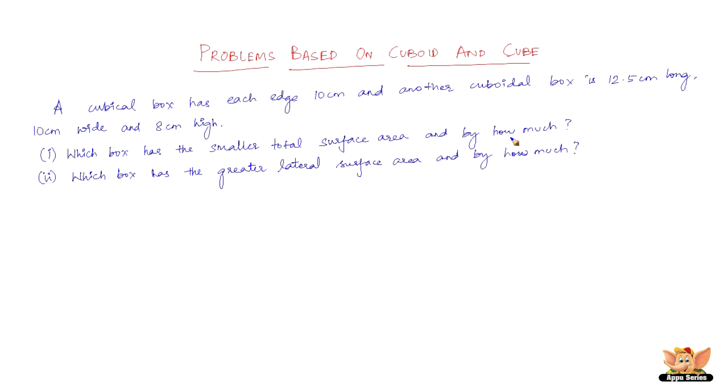What we have to do is, the data is very clearly given. The cubical box has an edge 10 cm. That is, the length, breadth and the height are all same for cube. Therefore, it is 10 cm. So, work out the total surface area for the cube as well as the cuboid. And then compare them and then find out whatever is required. Similarly, solve the second question as well. We will work out for the lateral surface area and see which of them are greater and by how much.